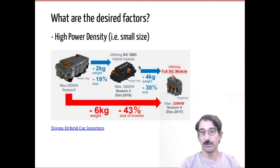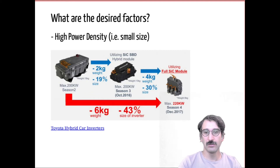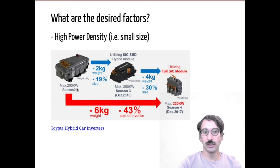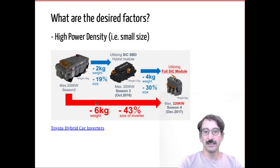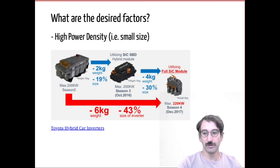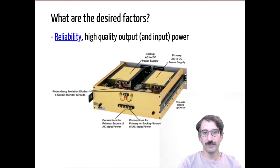Size is also important — we want to make power electronic devices as small as possible, in other words we want to achieve high power density. Here you can see the first-generation power converters for motor drives for Formula E races — those are 200 kW inverters. In just two seasons they basically halved the size and reduced the mass by six kilograms.